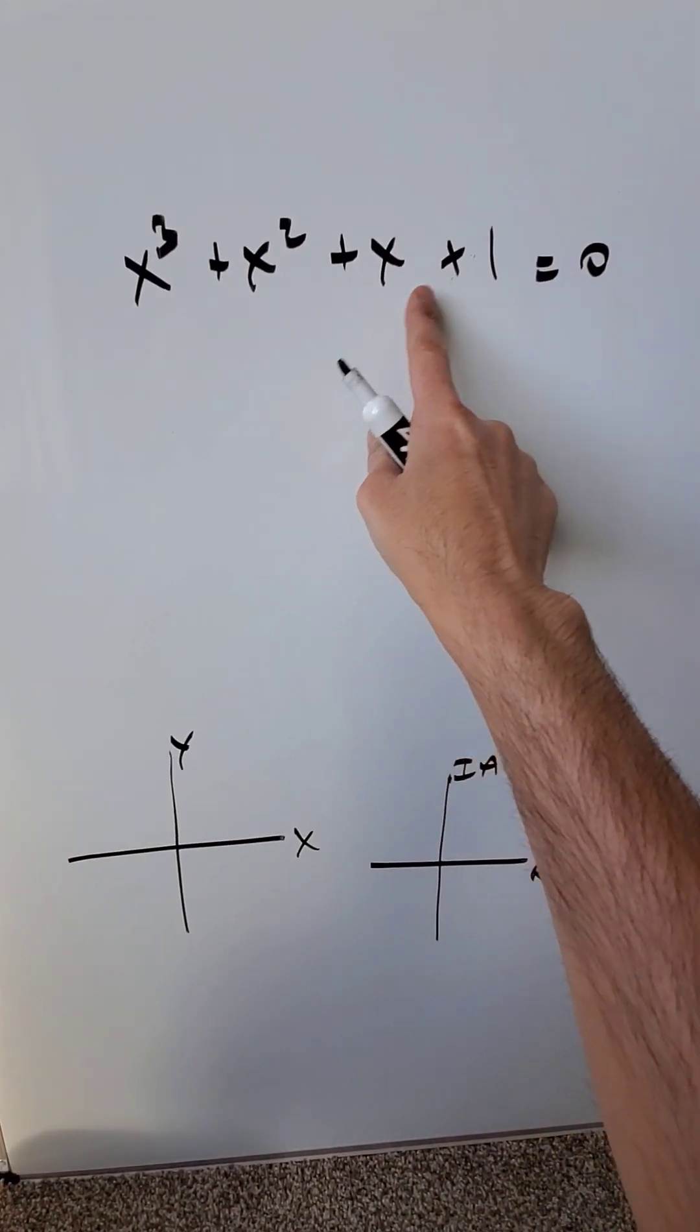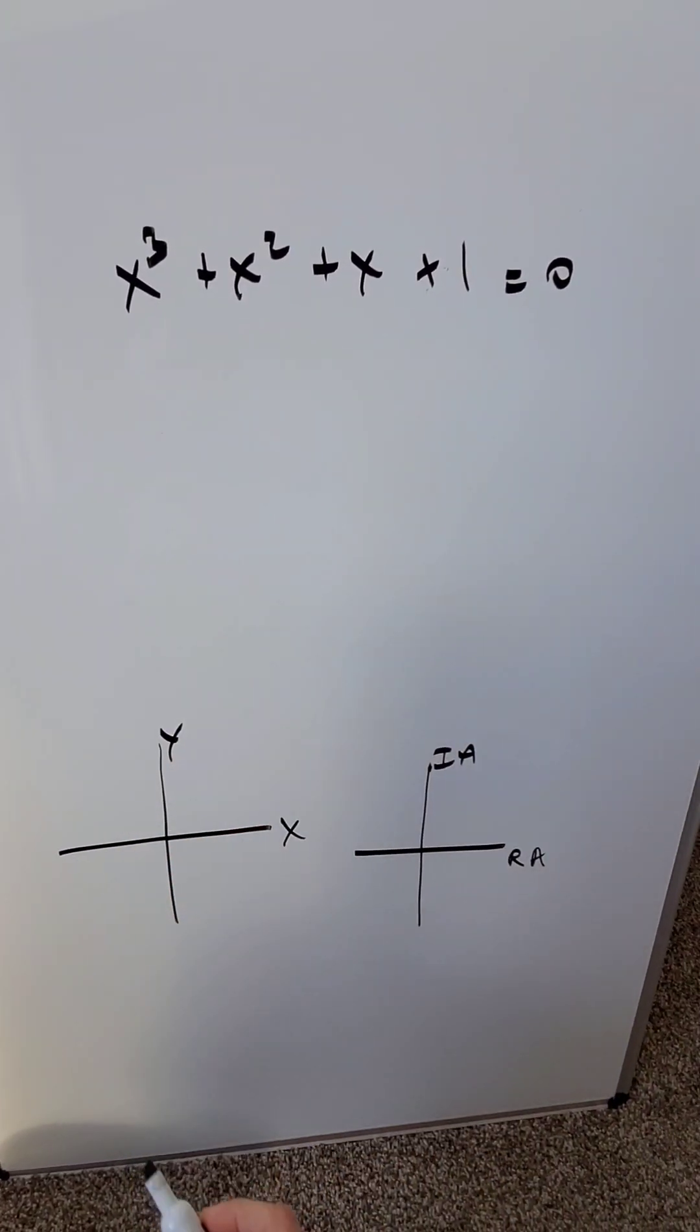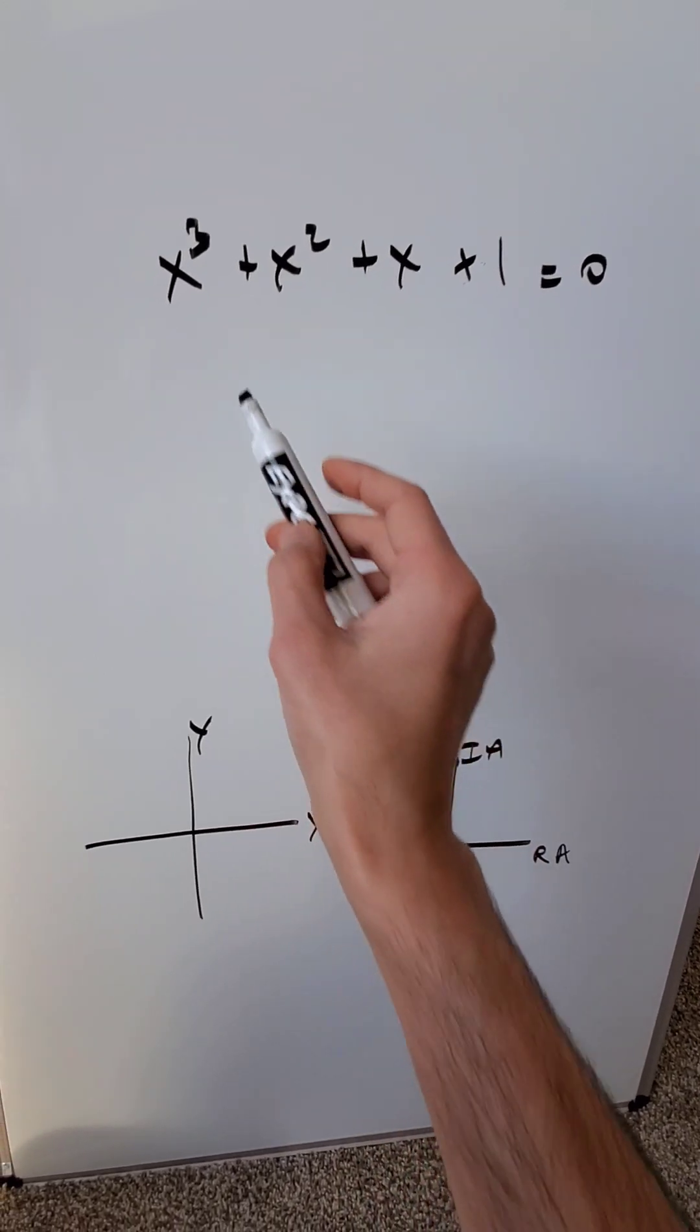We have an equation here, x cubed plus x squared plus x plus one. Find all solutions of this x and understand what they mean in terms of a graph.